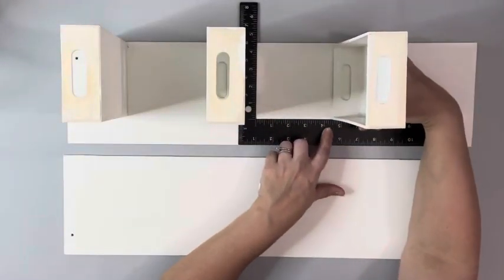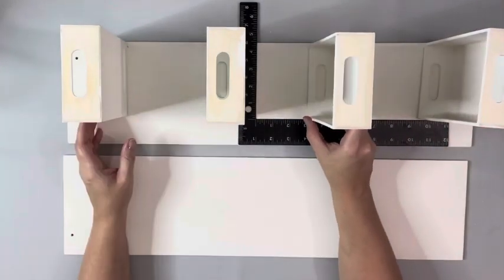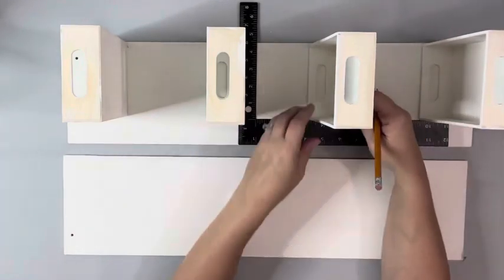For the third shelf, I measure it down from the bottom of the second shelf, and I glue that down six and a half inches below the bottom of the second shelf.